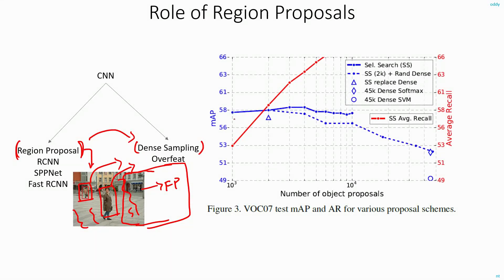This can be seen experimentally. Using the AlexNet architecture with Fast RCNN and taking the top 1000 proposals from selective search gives around 58% accuracy. Increasing the number of proposals to 2000 still improves accuracy, and even at 3000 accuracy remains high. But beyond that, accuracy starts dropping — because increasing the number of proposals starts including background regions, increasing false positives. So if you keep increasing the number of boxes, accuracy will start going down.